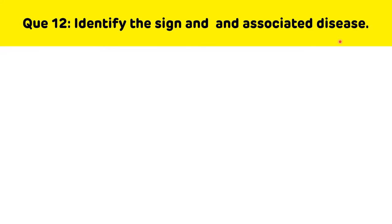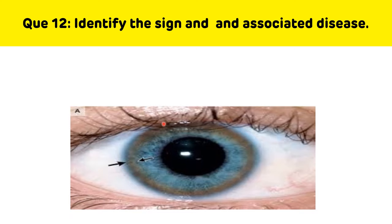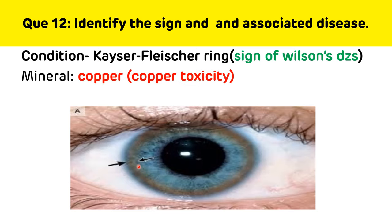Twelfth question: identify the sign and associated disease. This is the Kayser-Fleischer ring, which is seen in Wilson's disease and is associated with copper.